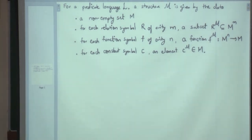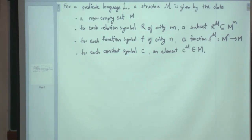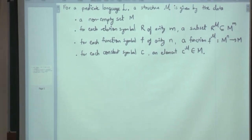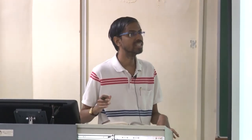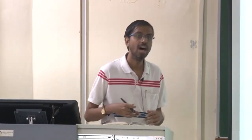A linear order is a structure in a language consisting of just one binary relation symbol. A group is a structure in an appropriate language, and a vector space is a structure in an appropriate language. All of these are structures, and associated with each you always have a sub-order, a subgroup, a subspace — they all fall under the same category.